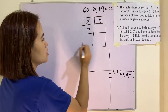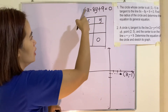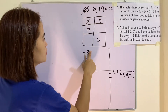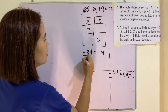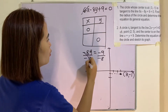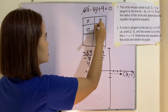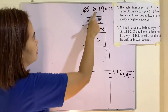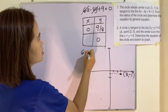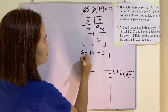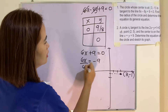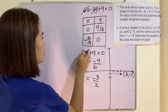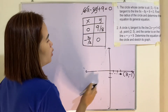Let x equal 0 and let y equal 0. If x is 0, we get negative 8y equals negative 9, so y equals 9 over 8. If y is 0, we get 6x plus 9 equals 0, so 6x equals negative 9, giving x equals negative 3 over 2. We now have the x-intercept and the y-intercept.